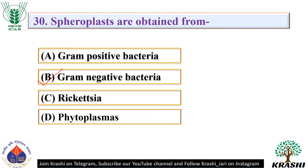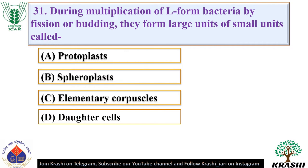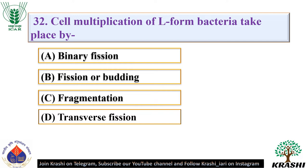Question number 31: During multiplication of L-form bacteria by fission or budding, they form large units of small units called. The correct answer is option C — elementary corpuscles. Question number 32: Cell multiplication of L-form bacteria takes place by. The correct answer is option B — fission or budding.